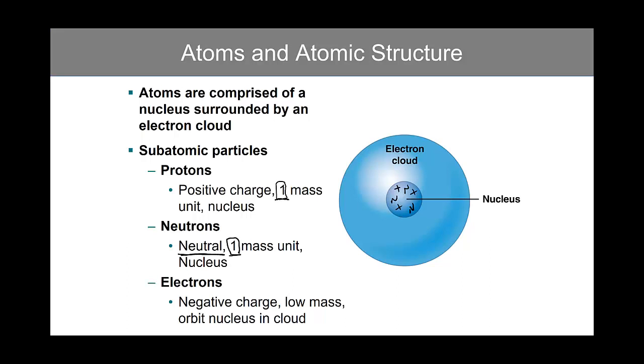Lastly, electrons. Electrons are found orbiting the nucleus within the electron cloud. Electrons are usually represented with a lowercase e with a negative sign.